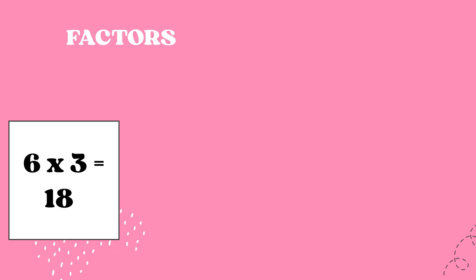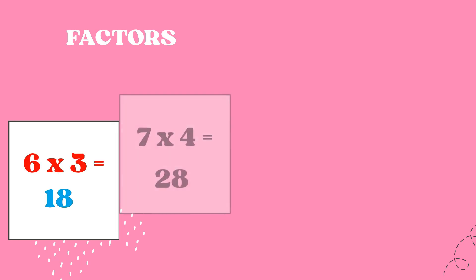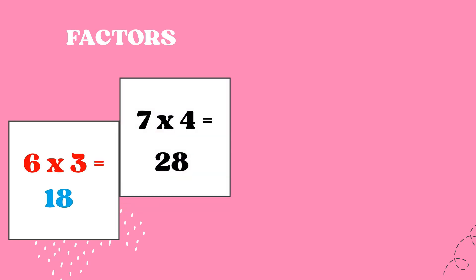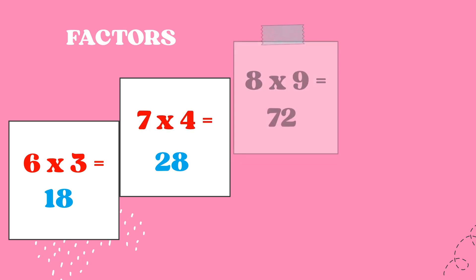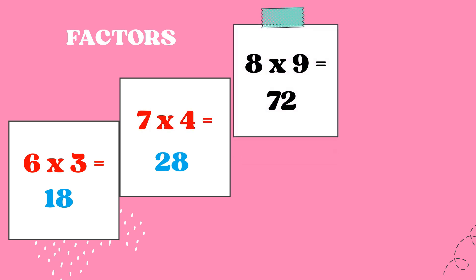Six times three is equal to 18, so the factors of 18 are 6 and 3. Seven times four is equal to 28, so the factors of 28 are 7 and 4. Eight times nine is equal to 72, and the factors of 72 are 8 and 9.